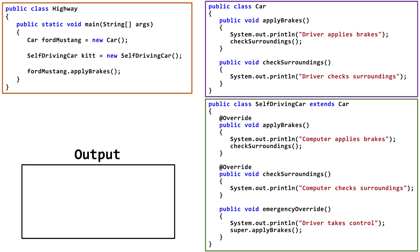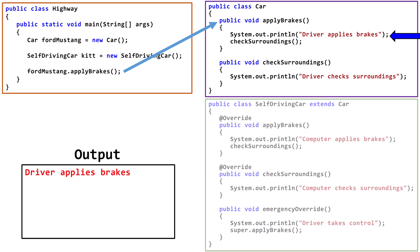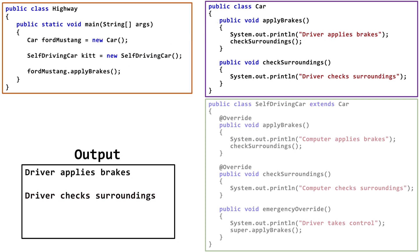Let's add a new class, Highway. Highway isn't in an inheritance relationship with either Car or Self-Driving Car. In Highway's main method, we create a variable called fordMustang and initialize it with a new instance of the Car class. We also create a variable called kit initialized with a new instance of Self-Driving Car. We call applyBrakes from fordMustang. Since it points at a Car object, we don't need to consider Self-Driving Car. It outputs 'driver applies brakes,' then calls checkSurroundings, which outputs 'driver checks surroundings,' and the program completes.